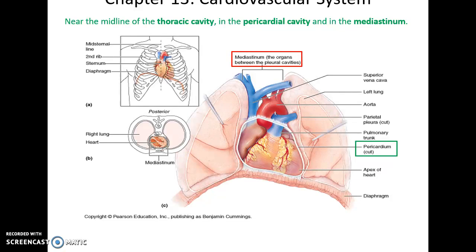The heart is found in the thoracic cavity near the midline. It is in the pericardial cavity and also in the mediastinum, which is the space between the two lungs.